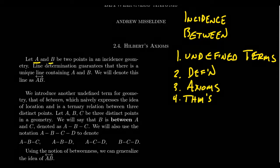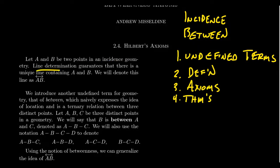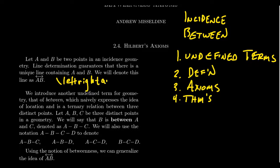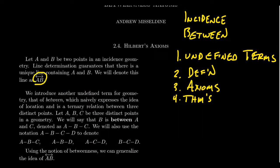Let A and B be two points inside an incidence geometry. The line determination axiom guarantees there exists a unique line containing A and B. We're going to denote that line as AB with a line symbol on top — a double arrow. If you're trying to do this in LaTeX, something like backslash leftright arrow should give you that symbol. The idea is this symbol denotes the line uniquely determined by points A and B, so instead of naming lines L1, L2, L3, we can refer to them by the points given by line determination.